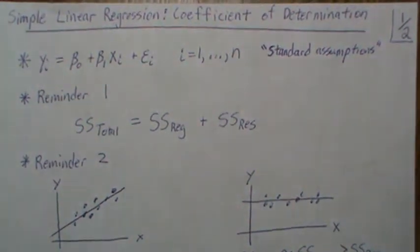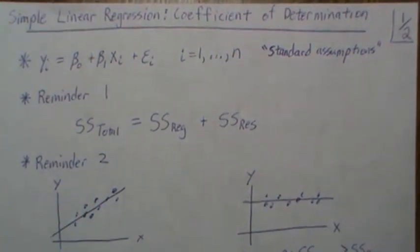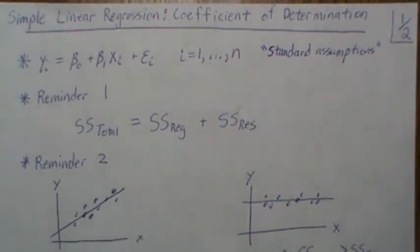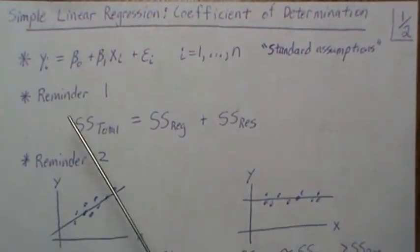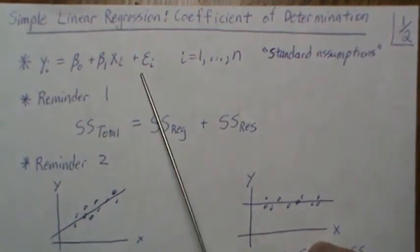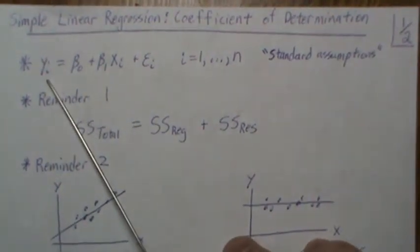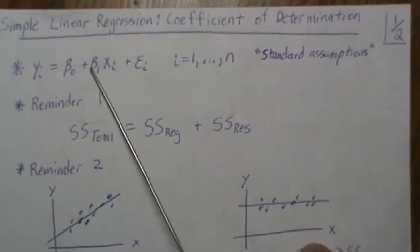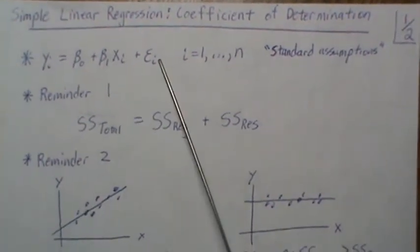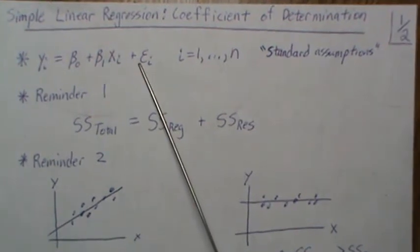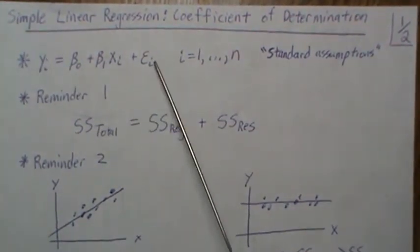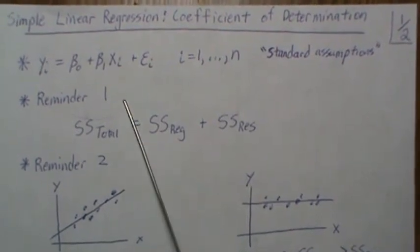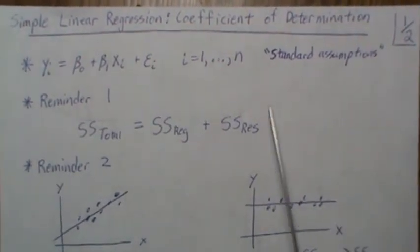Hello. In this video, the next in our simple linear regression series, we're going to look at the coefficient of determination. As a reminder, the model we're using assumes that our dependent variable y is essentially a line in the independent variable x, plus some error term epsilon — so it fluctuates around a line.